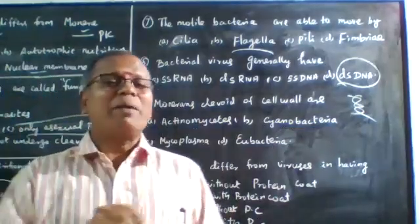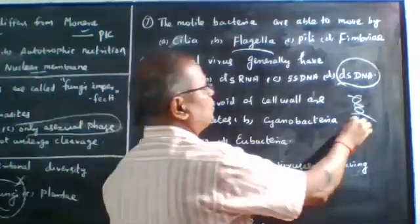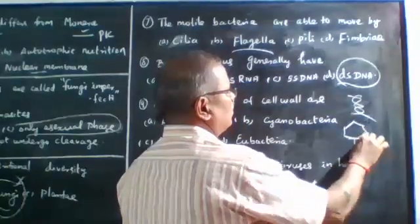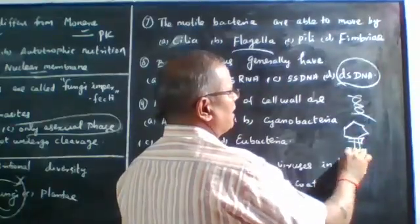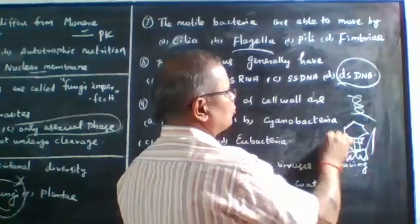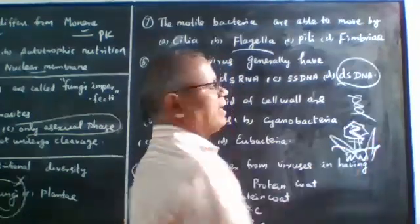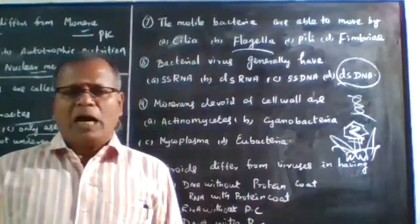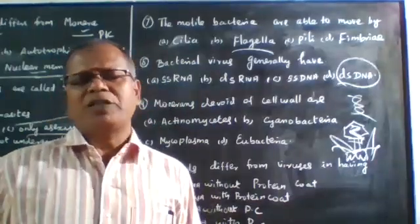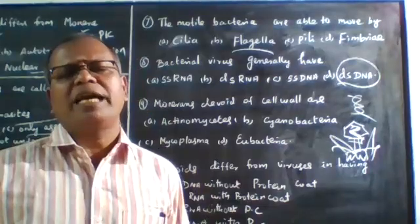Bacteriophage - a bacterial virus - undergoes lytic and lysogenic cycles. It has a basal plate, tail fibers, and its genetic material is double-stranded DNA. The bacteriophage's genetic material is double-stranded DNA.